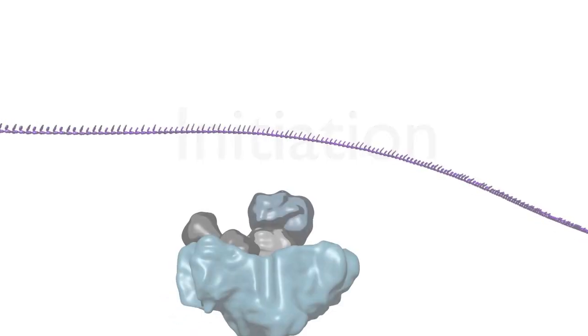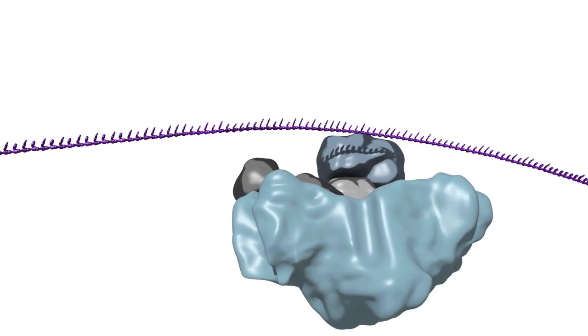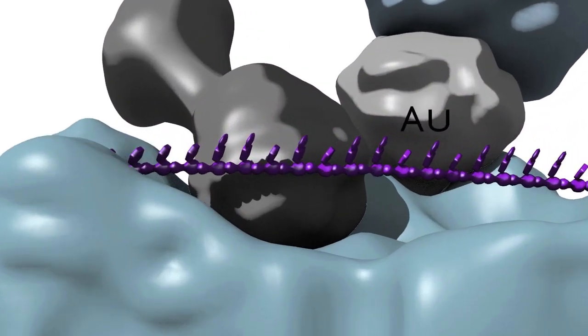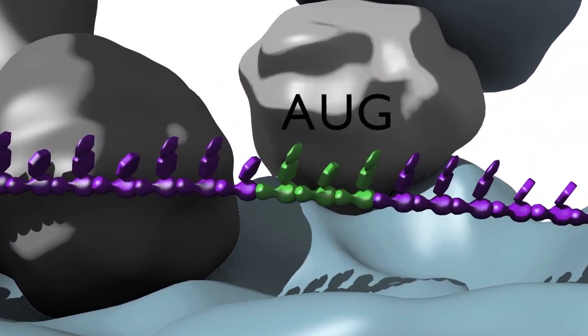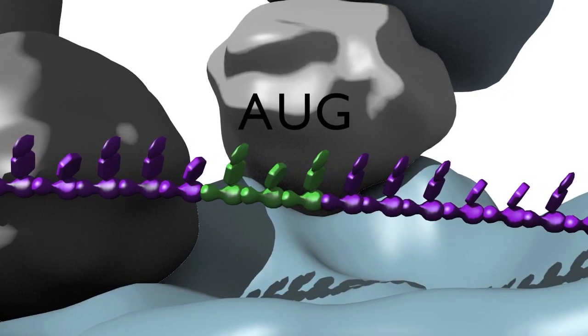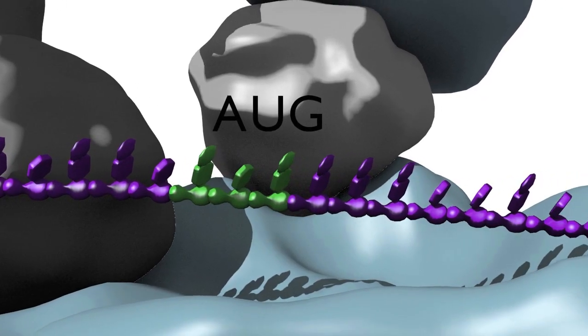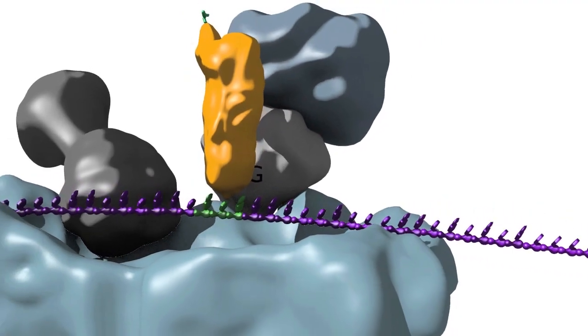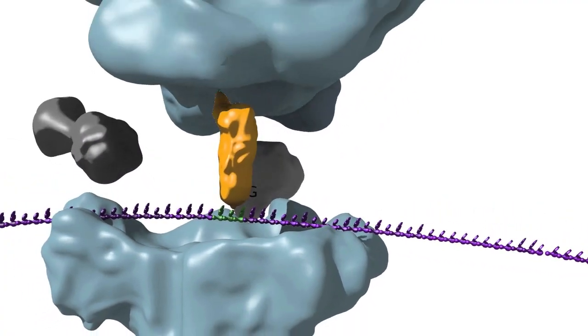As in most processes, there is a beginning, a middle and an end. The initiation phase of translation consists of the small subunit of the ribosome working in concert with various initiation factors to identify the starting AUG methionine codon that is positioned in the P site of the ribosome. Next, the initiator tRNA engages the AUG codon and the large subunit of the ribosome joins in a catalyzed reaction.